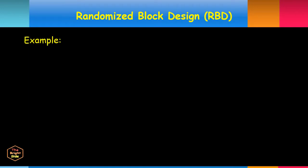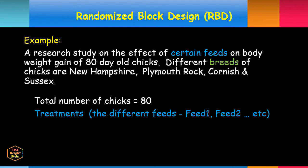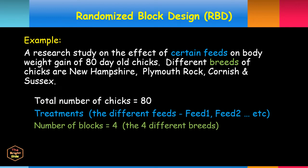For example, a research study on the effect of certain feeds on body weight gain of 80-day-old chicks. Different breeds are New Hampshire, Plymouth Rock, Cornish, and Sussex. We have a total of 80 chicks. The treatments are different feeds: Feed 1, Feed 2, and so on. The number of blocks equals 4, the four different breeds, so there must be 20 chicks in each breed.